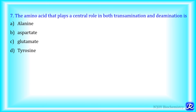MCQ 7: The amino acid that plays a central role in both transamination and deamination is — alanine, aspartate, glutamate or tyrosine? In transamination there is transfer of amino group, and that amino group is then removed by deamination. First glutamate is formed, and from glutamate there is removal of the amino group to form alpha-ketoglutarate. That is why the central molecule of both transamination and deamination is glutamate. The answer is C — glutamate.